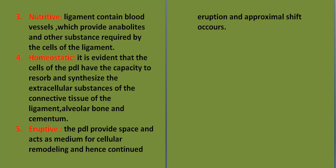Number three, nutritive. The ligament contains blood vessels which provide anabolites and other substances required by the cells of the ligament.